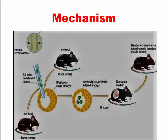From this brown mouse, the embryonic stem cells are collected and then the collected embryonic stem cells are cultured in the laboratory in proper media. When these embryonic stem cells are properly cultured, then the blastocyst is collected from another mouse.